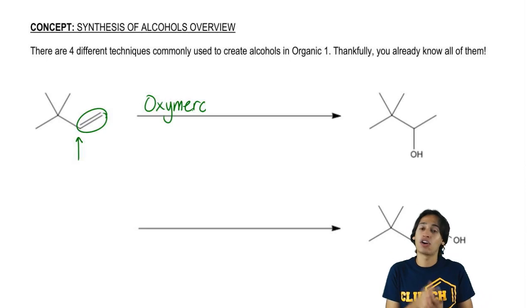And remember that carbocations have a tendency to shift. So in this case, this is an example of where I can add Markovnikov alcohol without worrying about a rearrangement.